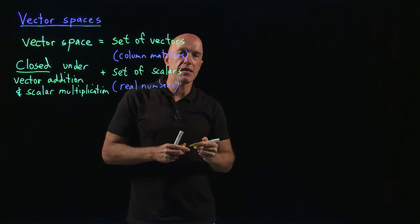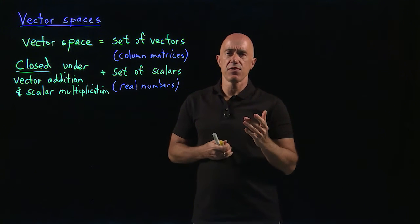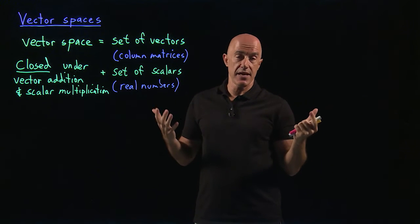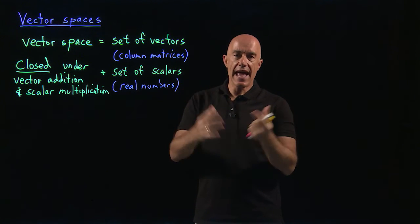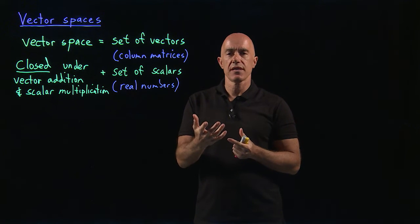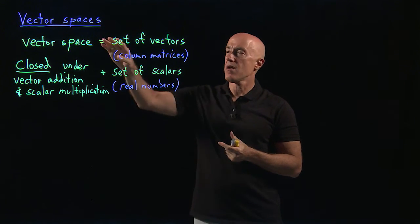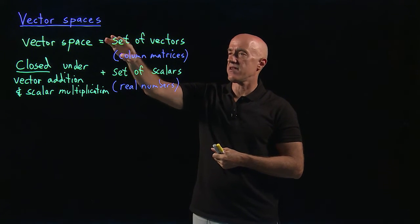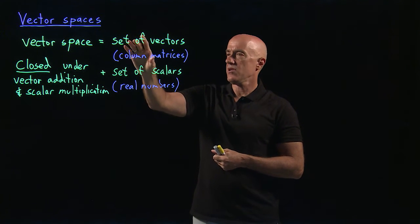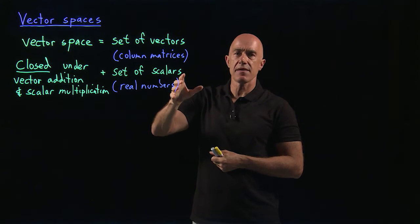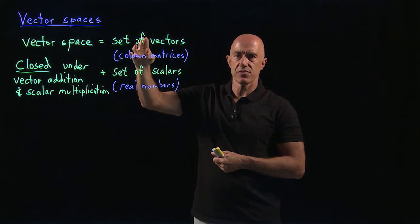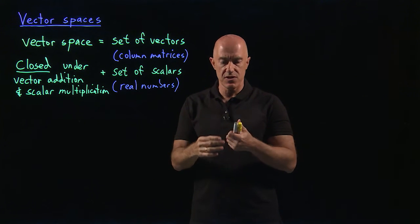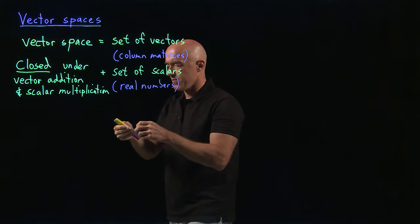What's the meaning of closed? It means that if you have two vectors in your vector space and you multiply them by scalars and then add them, the final result is also a vector and it has to be a member of your vector space. Starting with a set of vectors that form your vector space, you can multiply them by scalars and add them, and you don't leave that set — you stay in that set. That's the meaning of closed.